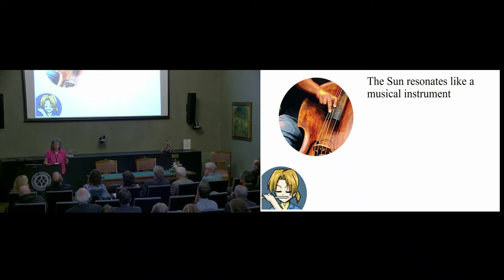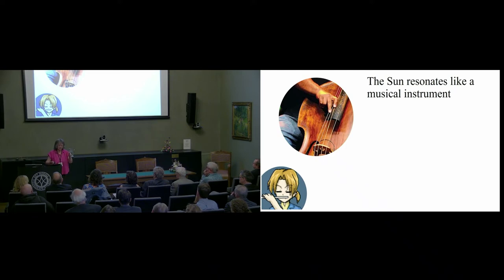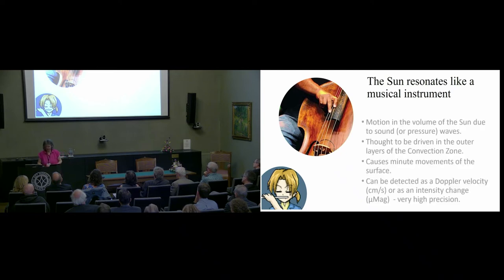I want to reinforce a point: the Sun resonates like a musical instrument. If you have a little instrument, you expect the note to be high; if you have a great big double bass, you expect it to be low. But it's more than that. Orchestras tune on A — if a trumpet plays the note and a piano plays the note, you can say that's a trumpet, that's a piano. They're playing the same note, but what's different is the overtone structure. It's not just what the note is, but what other notes get provoked at the same time — it's the fact that you've got more than one frequency that's so very powerful.